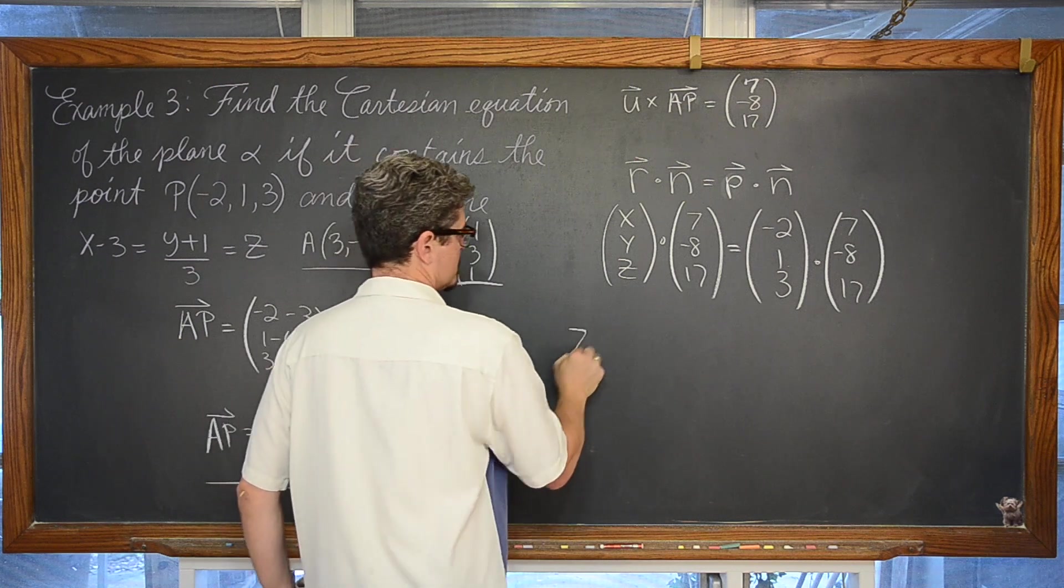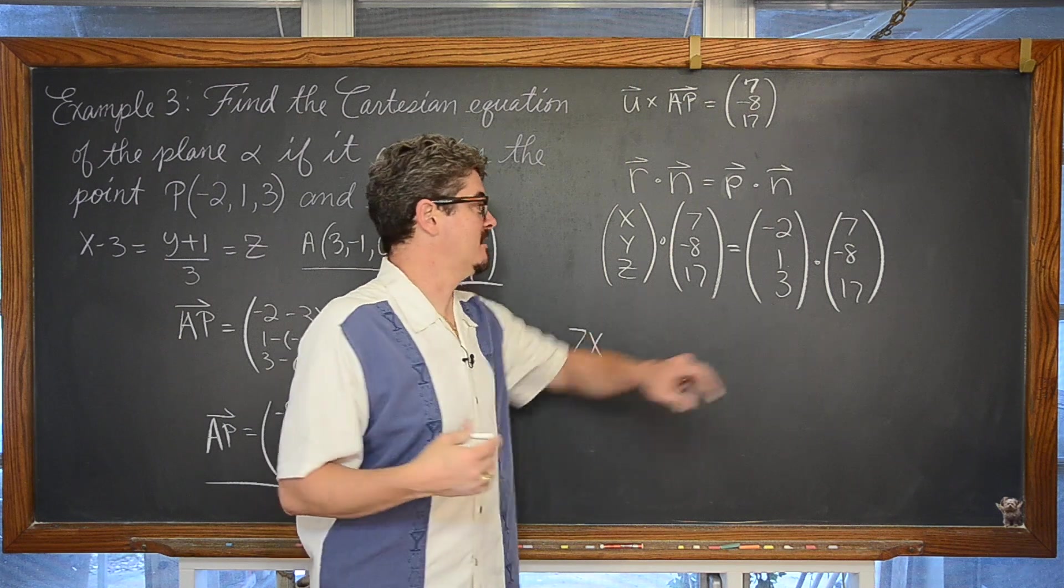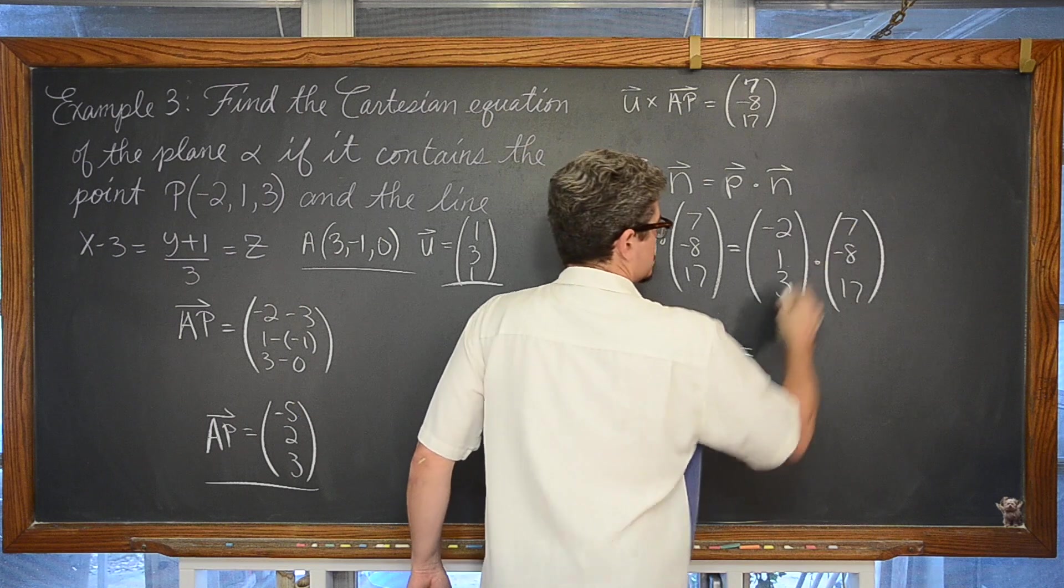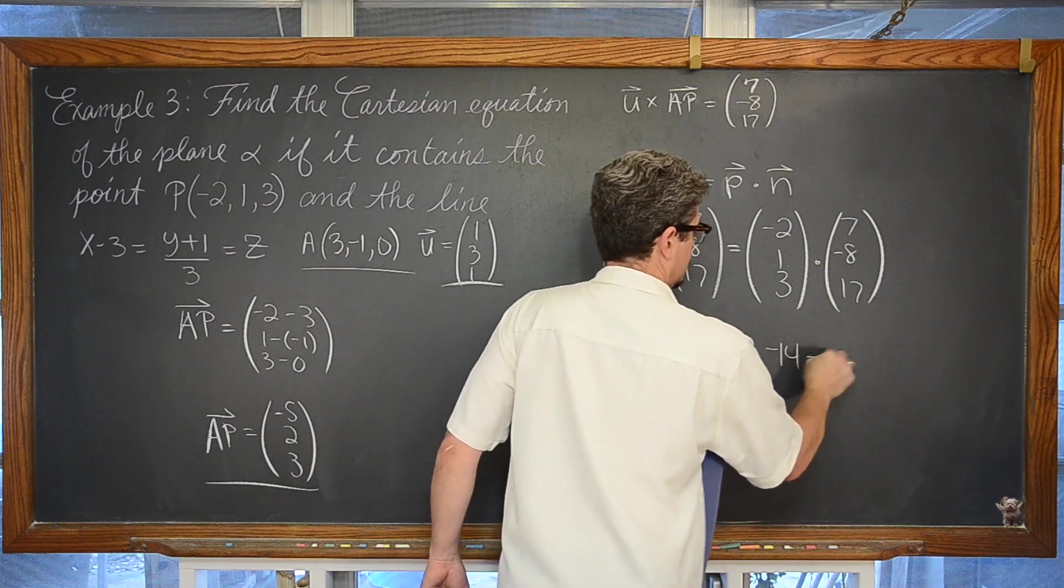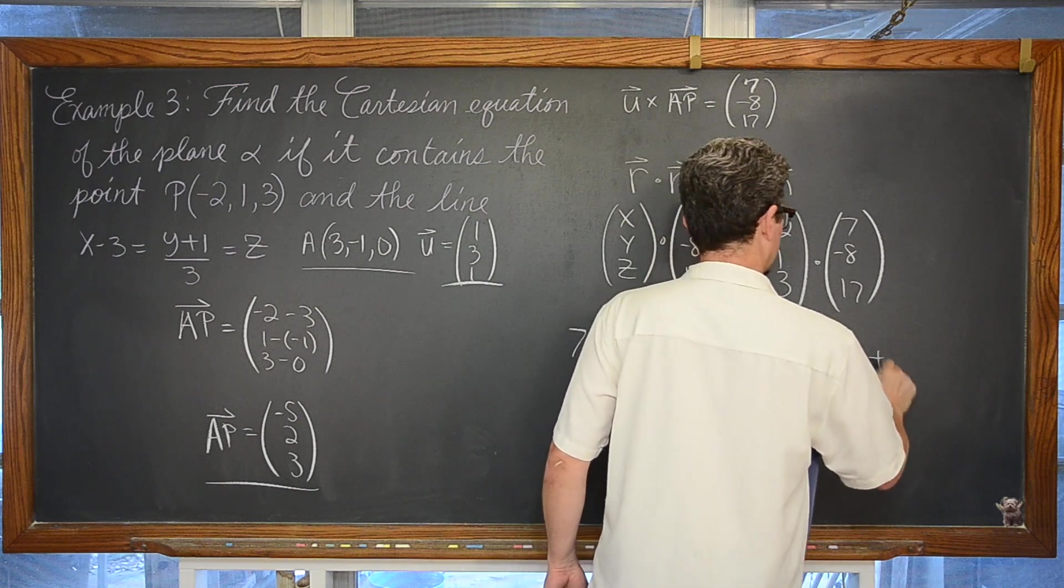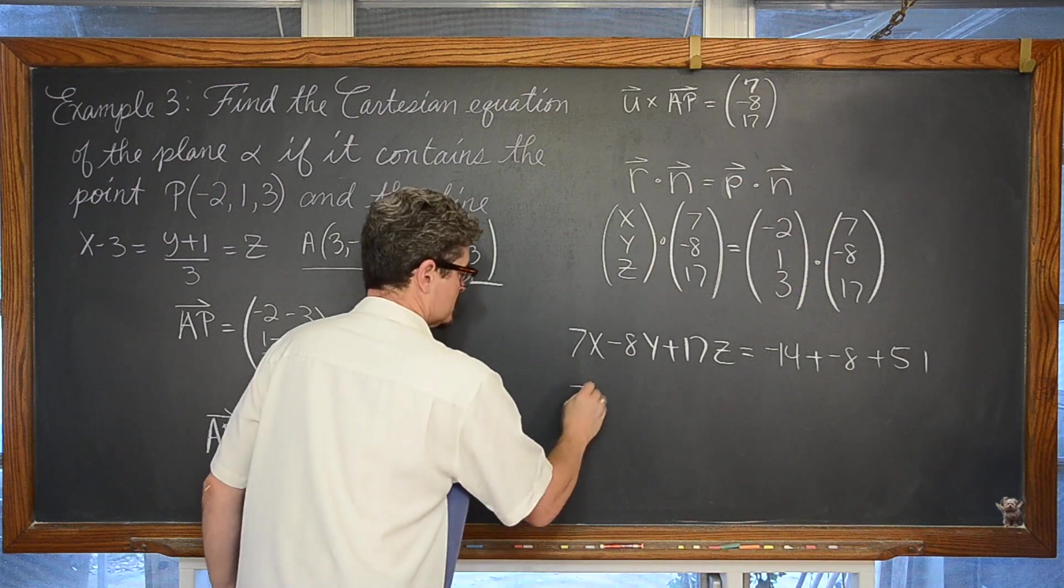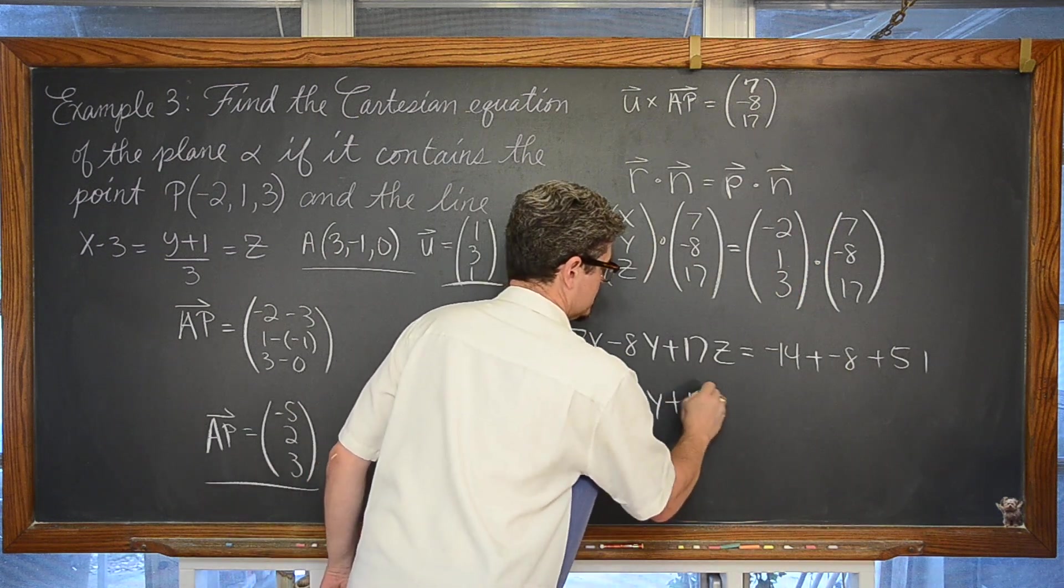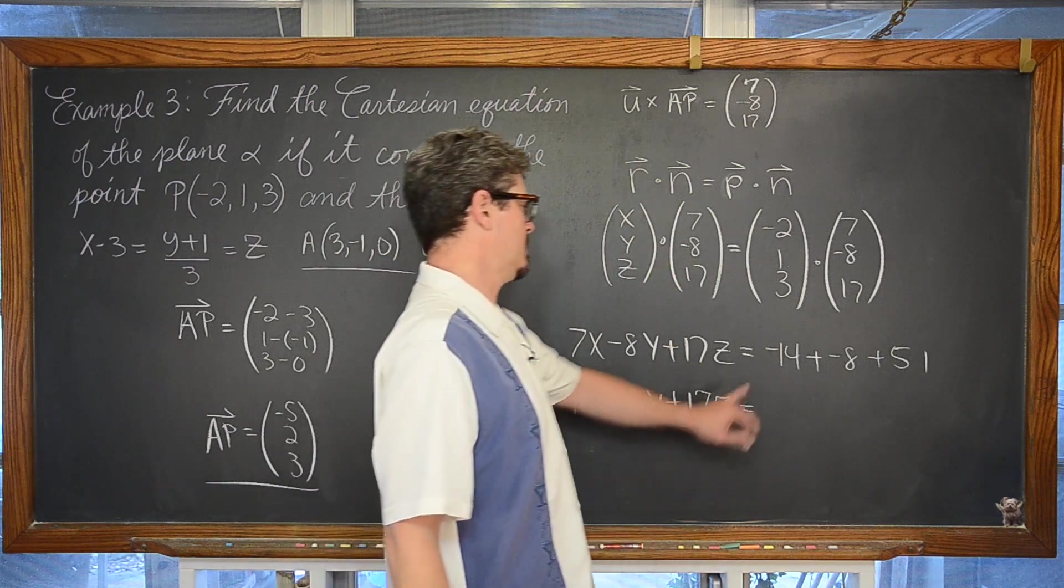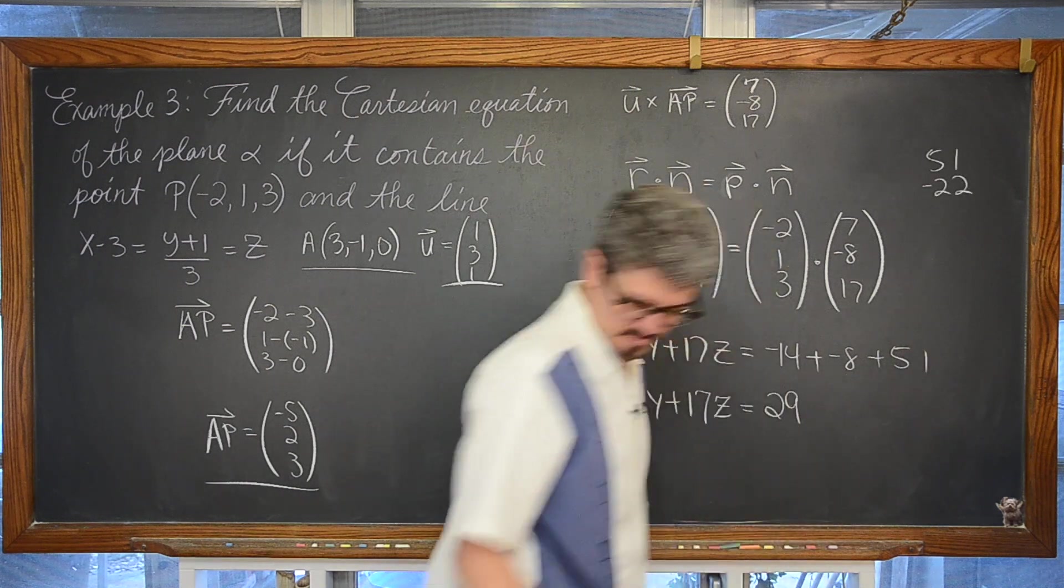And we get 7x. And by the way I did not use coordinate p in my notes. I used coordinate a that I pulled from the line. But you will see that we have the same answer. Negative 2 times 7 is negative 14. Plus 1 times negative 8 is negative 8. Plus we have 3 times 17 is 51. So we are looking at 7x minus 8y plus 17z is equal to 29.